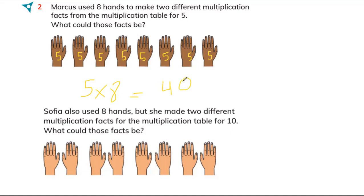Sophia also used eight hands, but she made two different multiplication facts for table 10. What could she make? So look, she is going to make facts for 10 with eight hands.